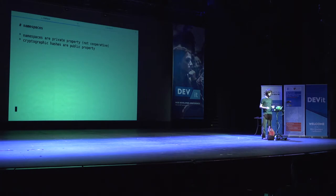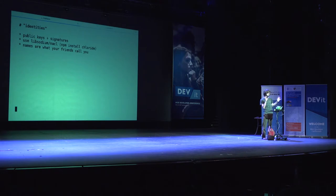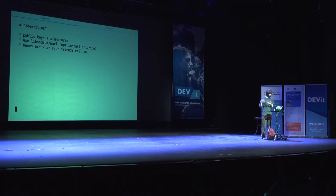You have to abandon some ideas we're used to. For identities, one thing you can do is use public keys as the identity itself. Using an ed25519 curve, those are very short — 32 or 64 bytes — and then you can sign every message to your log. There's a module in NPM called Chloride you can use for that. And for names — names are what your friends call you. There can be two Johns in a room and that's okay. We'll figure out how to deal with that — humans know how to deal with these problems. We don't need technology to insist there can only be one John on the entire planet, especially not offline.